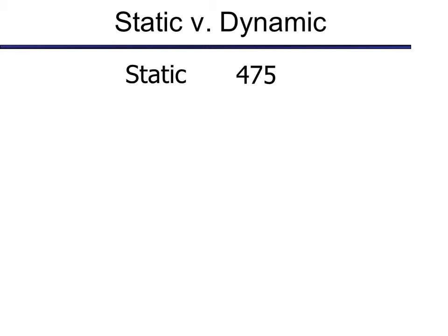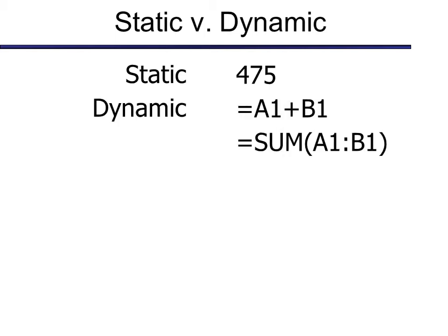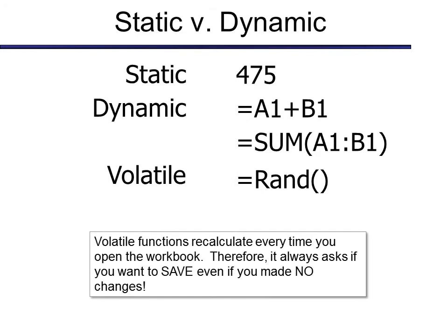So let me show you the difference. We actually have three different kinds of entries into Excel. A static, that could be like a number, a value. 475 is simply a number. I put it in, it never changes until I physically go in and change it. Then we have something that's dynamic. If it's dynamic, it could be like a cell reference here in a mathematical formula, or a cell reference here in a function. Either way, whenever I change whatever's in A1, this will change, which is exactly what I want. I want the answer to change based on whatever I happen to do in A1 or B1. So that's a dynamic change. That means it will only change if I personally change something about that formula. But our third option now is volatile, like RAND, which is a volatile function. That means it will recalculate every time you open the workbook. Therefore, it will always ask if you want to save even if you made no changes, which can be a little disconcerting. You think, what did I do? I didn't mean to make any changes. Well, you probably didn't. It just had a volatile function in it.